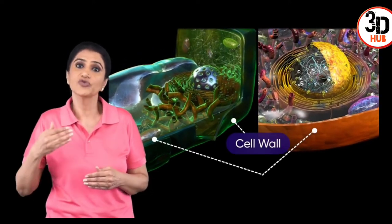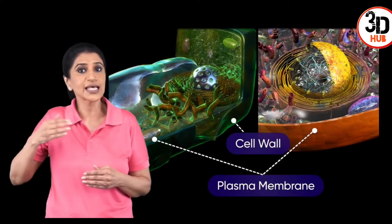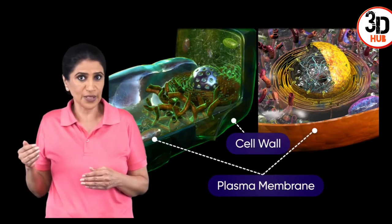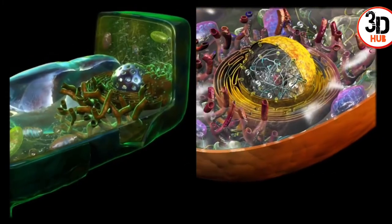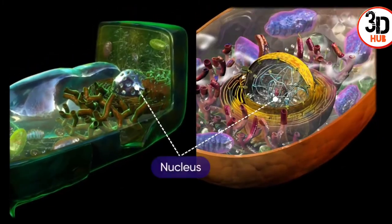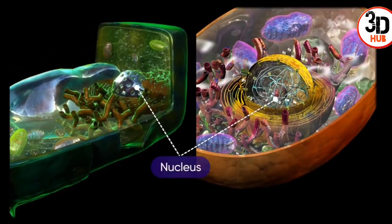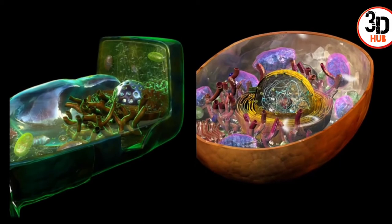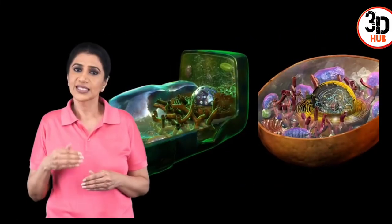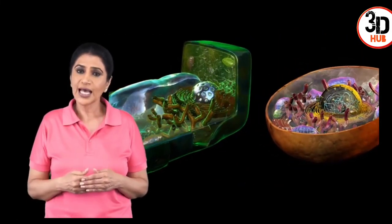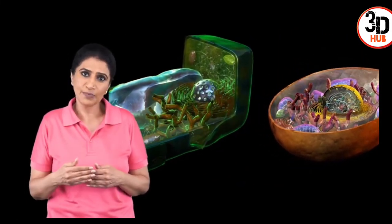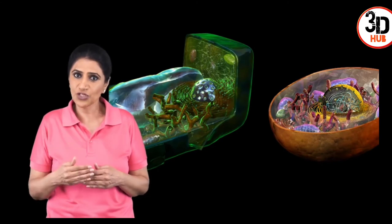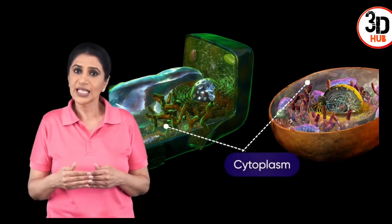The plasma membrane is the outermost covering of an animal cell, whereas a plant cell has an additional rigid cell wall outside the plasma membrane. A distinct nucleus with a nuclear membrane and a nucleolus is prominently present inside a eukaryotic cell.